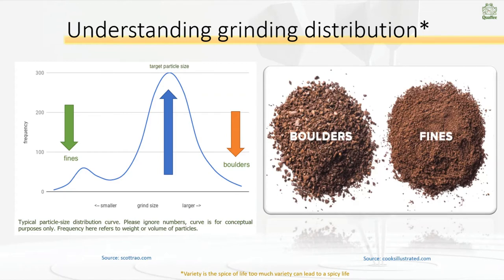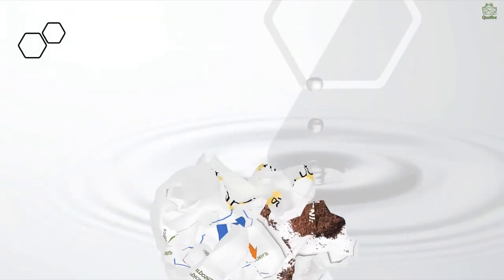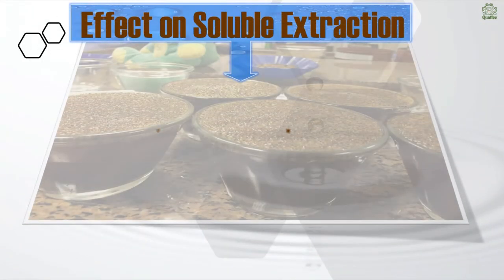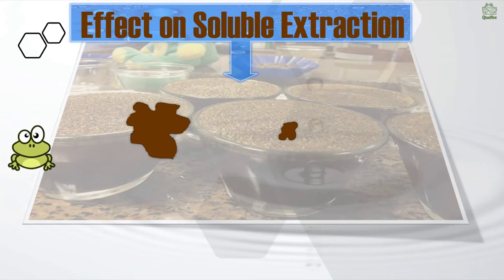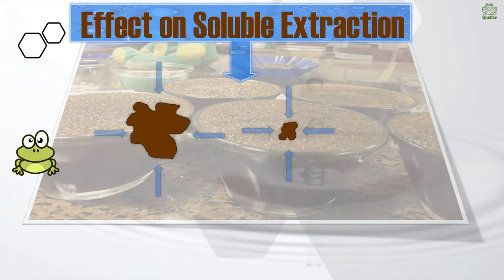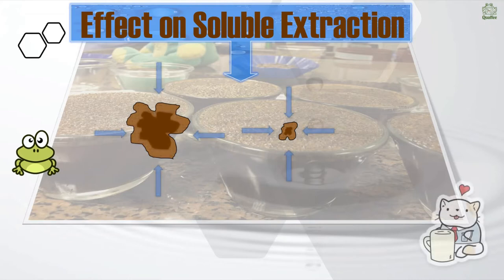Why is this important? Let's discuss how the brew itself is extracting the coffee. Because we've got so many different particles, we've always got fines — the one on the right is a fine, the one on the left is a boulder. It's obviously not real size but you get the idea. As the water surrounds the particle, it goes into the particle and starts extracting the goodness out of the coffee.